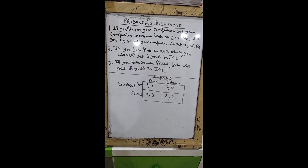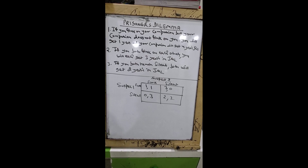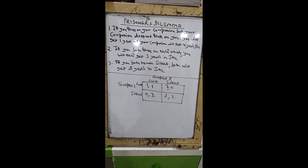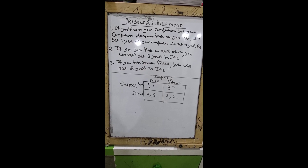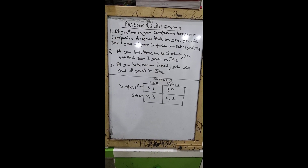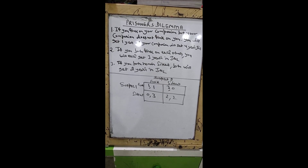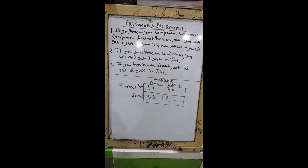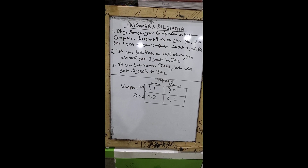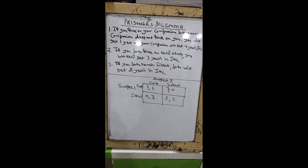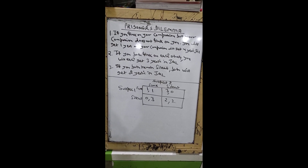Suppose there are two suspects and the police does not have any evidence against them. So what they do is they keep them in a separate room and tell them the following three things. If you think on your companion but your companion does not think on you, you will get one year and your companion will get four years in jail. If you both think on each other, you will each get three years in jail. If you both remain silent, both will get two years in jail.